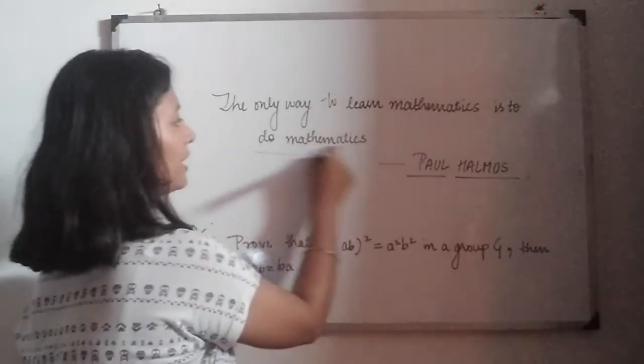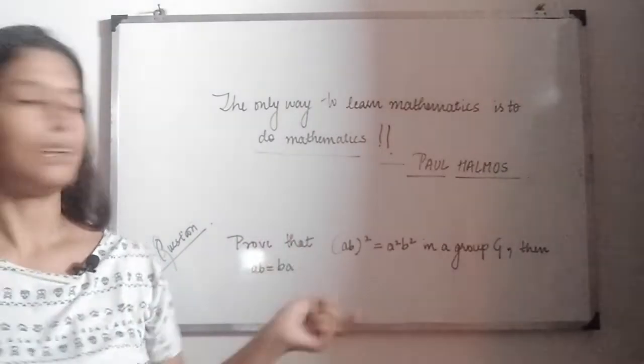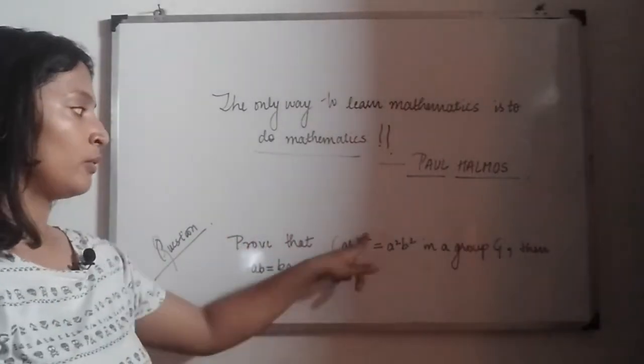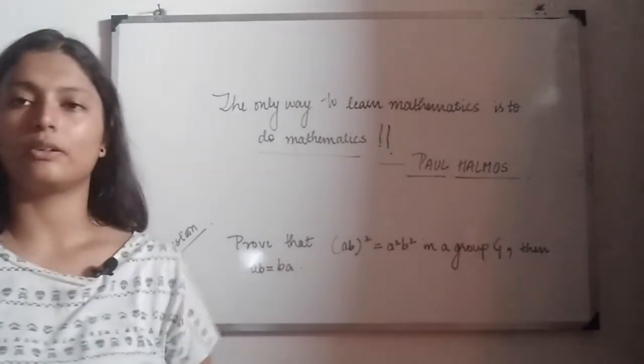So this is the only way to do mathematics, the point to be noted. And today's question is: prove that (ab)² = a²b² in a group G, implies ab = ba.